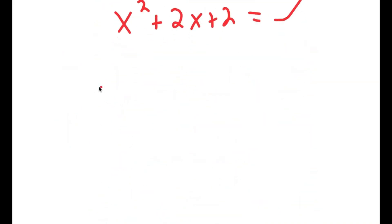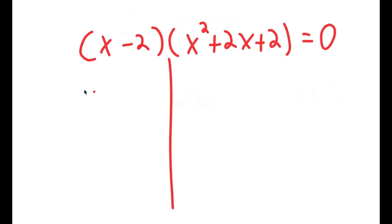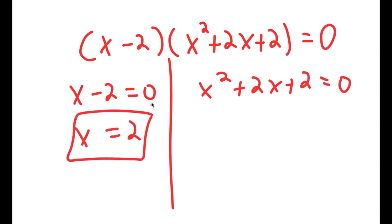This means that x minus 2 times x squared plus 2x plus 2 is equal to 0. For x minus 2 equals 0, x is obviously equal to 2, and we already found this solution before, so this is no surprise.